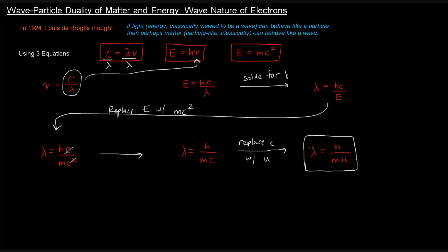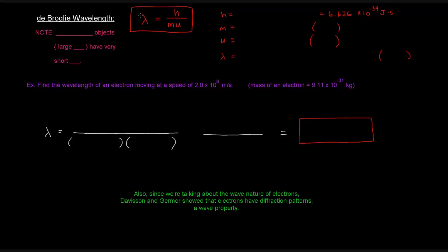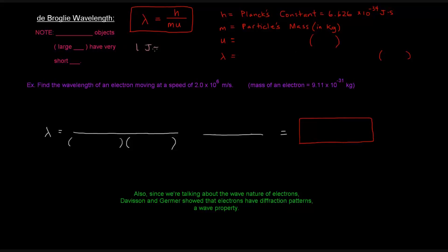This is the de Broglie wavelength equation: lambda equals h over mu. Here, h is Planck's constant, which is 6.626 times 10 to the negative 34 joules times seconds. m is the particle's mass, specifically in kilograms — this must be in kilograms because it has to cancel with the joule unit, since 1 joule equals 1 kilogram times meters squared per second squared.